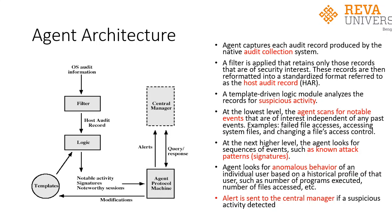The agent also looks for sequences of events such as known attack patterns — that is, the signatures of the attacker. Additionally, the agent protocol machine looks for anomalous behavior of an individual user based on a stored historic profile, such as number of programs executed, number of files accessed, or number of commands executed. All kinds of user history are stored and compared with current activity. If any violation is found, they are flagged as intruders, and an alert is sent to the central manager indicating suspicious activity in the network.